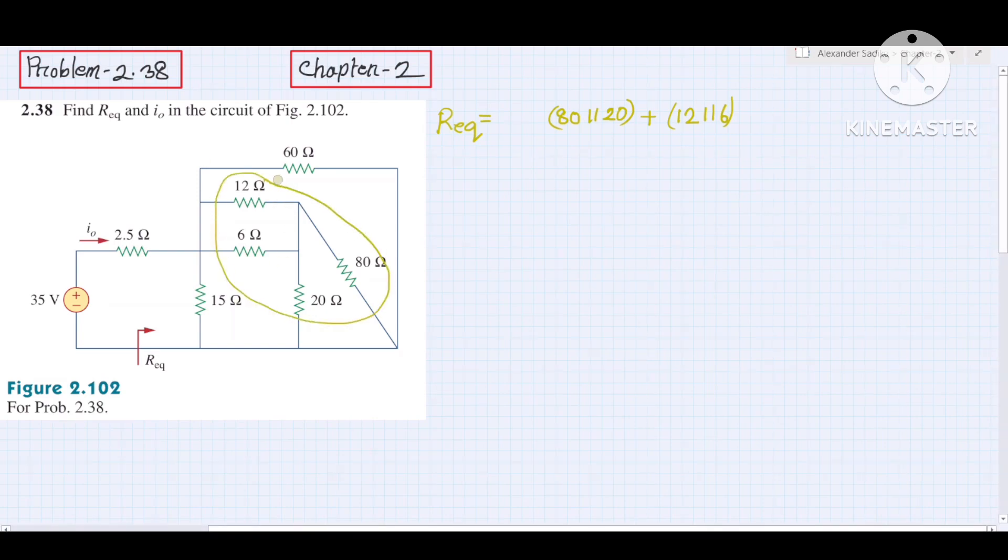Then we have 4 ohm in parallel with 60 ohm. This gives us 5 ohm.